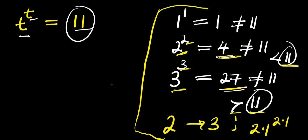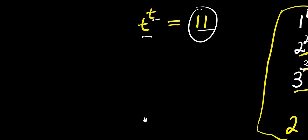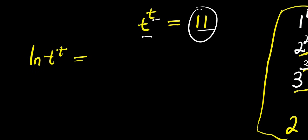Now in this video, I want to show you how to solve this problem without testing values of t. I'm going to show you how to solve it step by step. We are going to start by introducing natural log. So we have ln of t to the power of t, and this equals the natural log of 11.